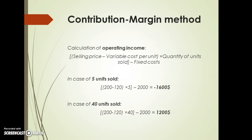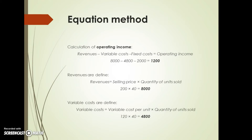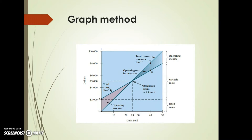As you can see on the slide, another method is the equation method, which is another way to calculate operating income. The last method is the graph method. The graph method helps managers visualize the relationship between units sold and operating income over a wide range of quantities of units sold.